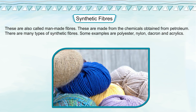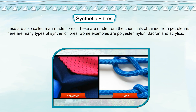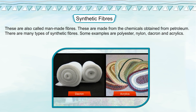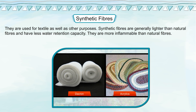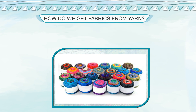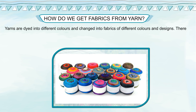Synthetic fibers, also called man-made fibers, are made from chemicals obtained from petroleum. There are many types of synthetic fibers — some examples are polyester, nylon, dacron, and acrylics. They are used for textiles as well as other purposes. Synthetic fibers are generally lighter than natural fibers and have less water retention capacity. They are also more inflammable than natural fibers.